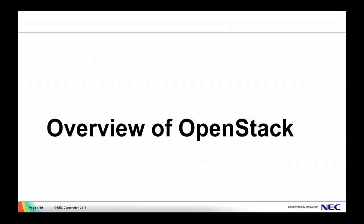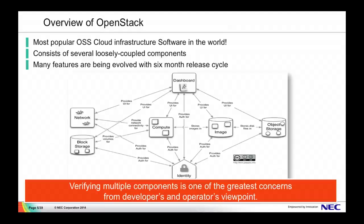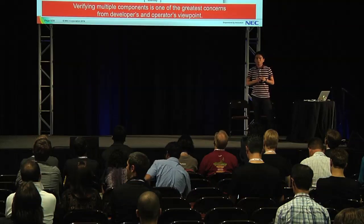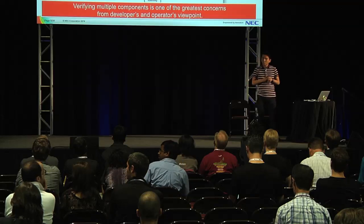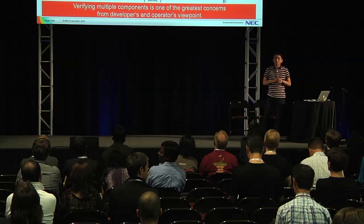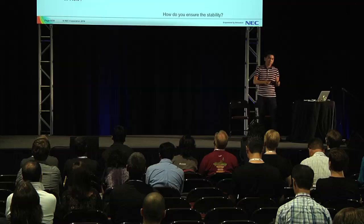Next is an overview of OpenStack. OpenStack is the most popular OSS cloud infrastructure software in the world. It consists of several loosely coupled components, and many features are being developed with a six-month release cycle. Managing multiple components is one of the greatest concerns from developers' and operators' viewpoint.